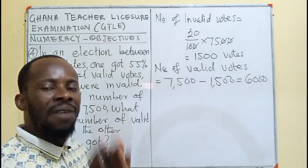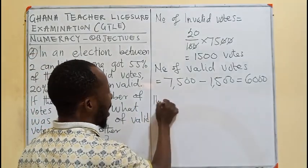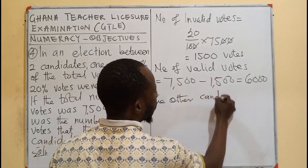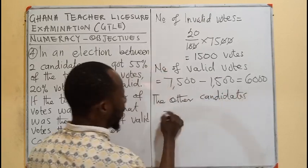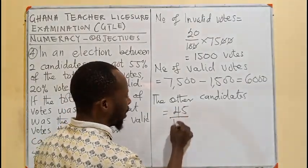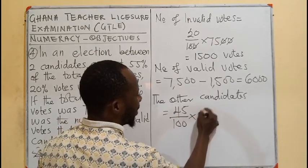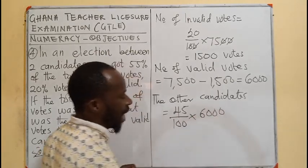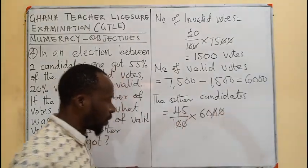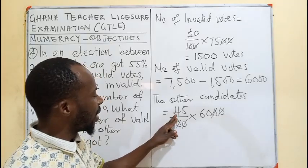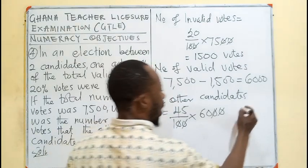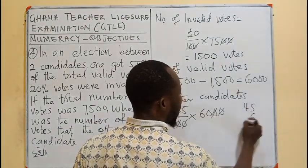So, if 6,000 are valid, the other candidate will have 45% of that vote. 45% means 45 over 100 times 6,000. The 100 cancels, and we are left with 45 times 60.